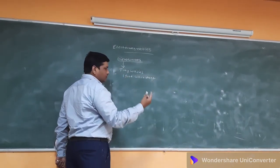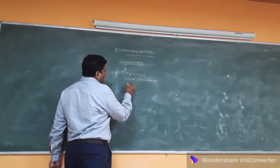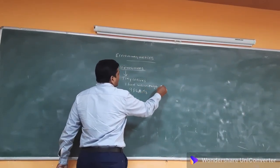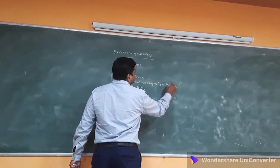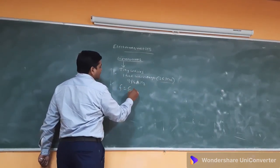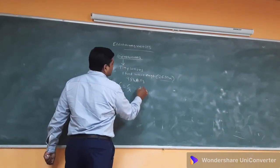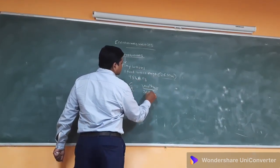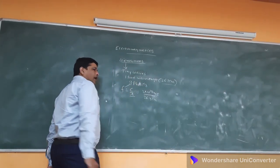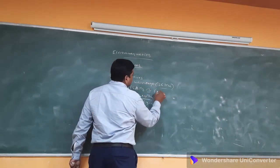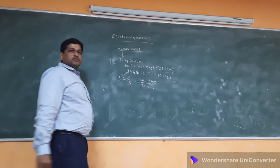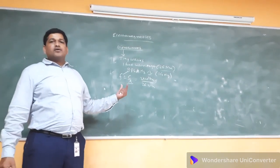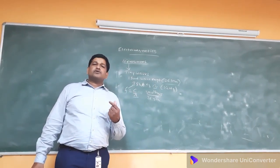If you consider one foot wavelength and convert it into meters and then into frequency using the formula F = c/λ, substituting c as 3×10¹⁰ cm per second and λ as approximately 26.3 cm, you will get around 984 megahertz, which is approximately 1 gigahertz. So waves with a frequency of around 1 gigahertz and wavelengths in centimeters are called microwaves.